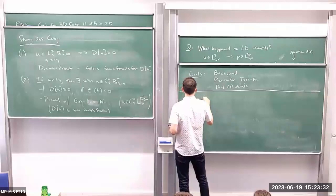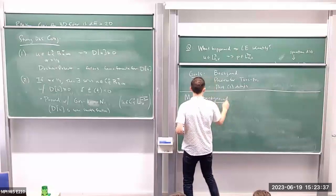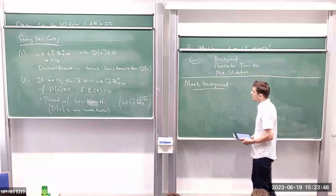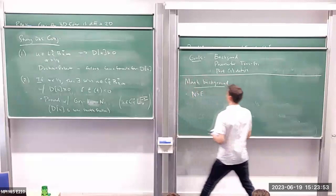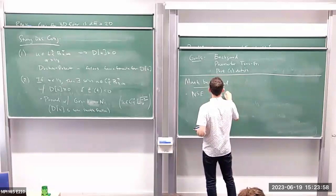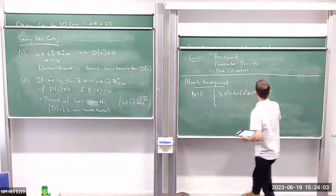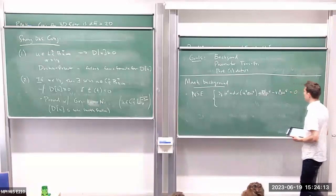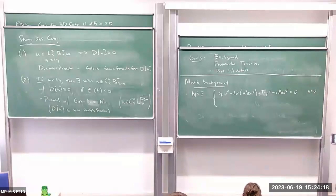Let's discuss a bit of the motivation. The first thing I want to do is motivate the conditions appearing in the strong Onsager conjecture, and in order to motivate those conditions I need to write down the Navier-Stokes equations: ∂_t v_ν + div(v_ν ⊗ v_ν) + ∇p_ν = ν Δ v_ν, with ν positive, together with the divergence-free condition. And at least formally, as ν goes to zero, you might expect to recover Euler out of Navier-Stokes.